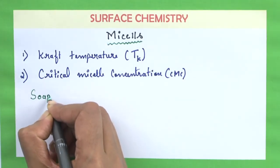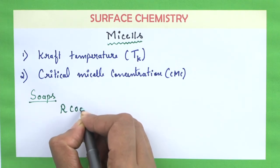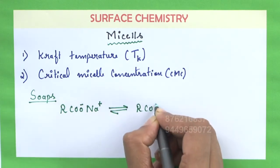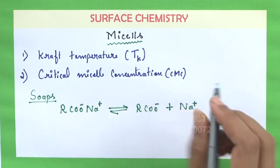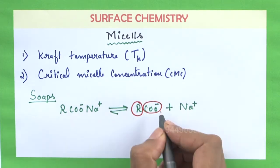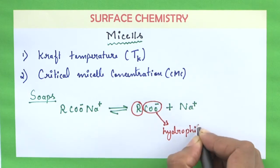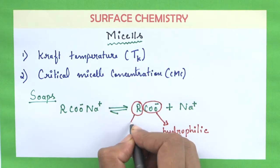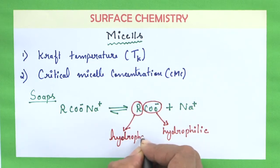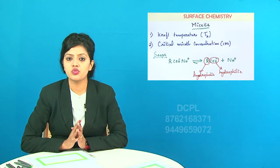Let us explain this using soaps as an example. Soaps are sodium salts or potassium salts of fatty acids, generally represented as RCOO⁻ Na⁺. When dissociated in water, it forms RCOO⁻ and Na⁺. In RCOO⁻, the COO⁻ carries a negative charge, attracting positive charges from water — making it hydrophilic — while R is the hydrocarbon chain and is hydrophobic. So hydrophilic forms the head and hydrophobic forms the tail.